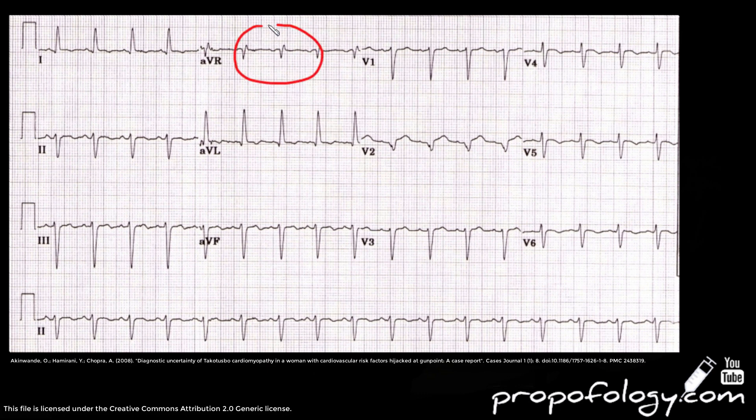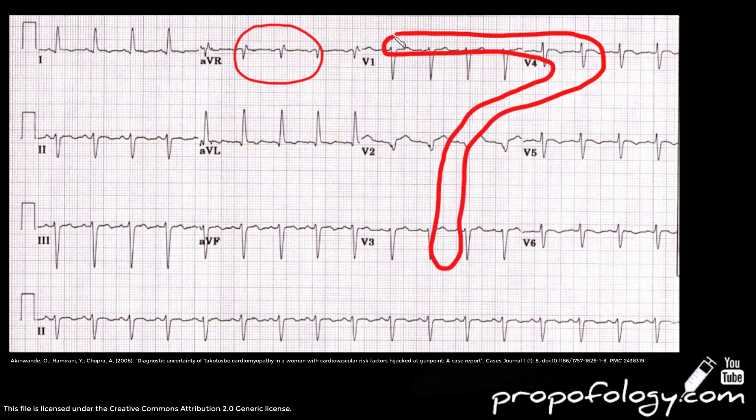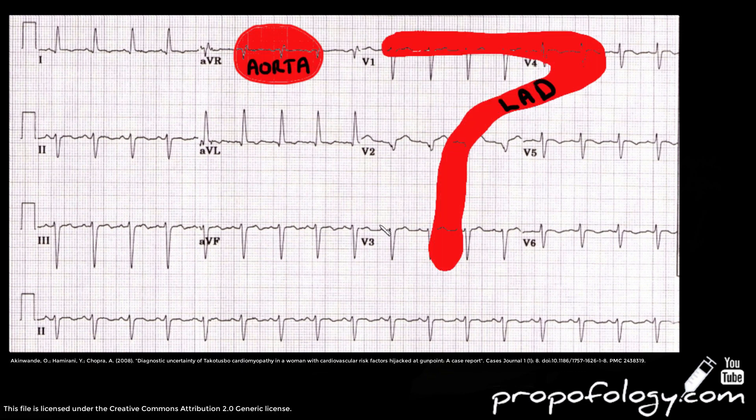The last thing we're going to look at in this video are the coronary artery territories. You can see I've drawn the aorta, which is the aortic root at AVR, and you see V1, V4, V2, V3, all of the LAD, and I've drawn it to help you think about how the LAD comes off the aorta.